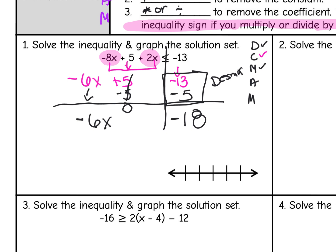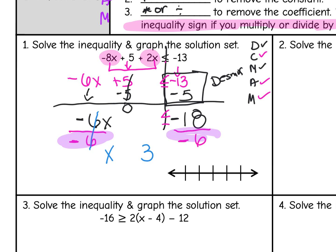The inequality sign has been following us all the way down. My last step is to divide by negative 6 to get a positive x. My 6s cancel out, leaving x, and negative 18 divided by negative 6 is positive 3. Now the golden rule comes into play — because I divided by that negative 6, I flip the sign. So it's no longer less than or equal to — it's now greater than or equal to. The solution is x ≥ 3.